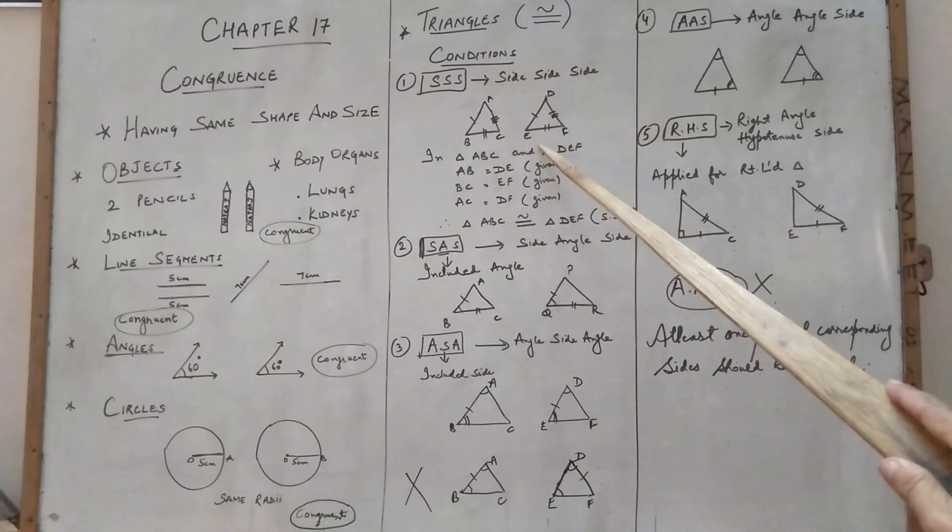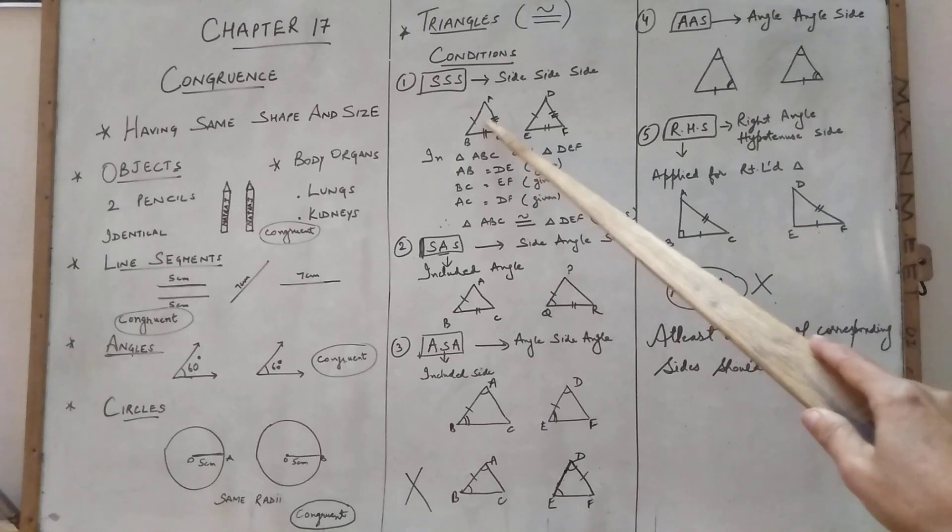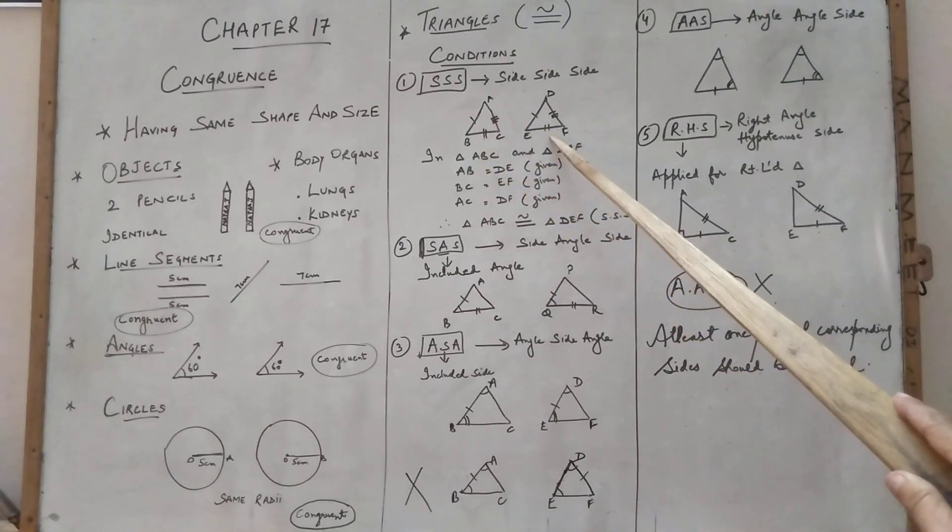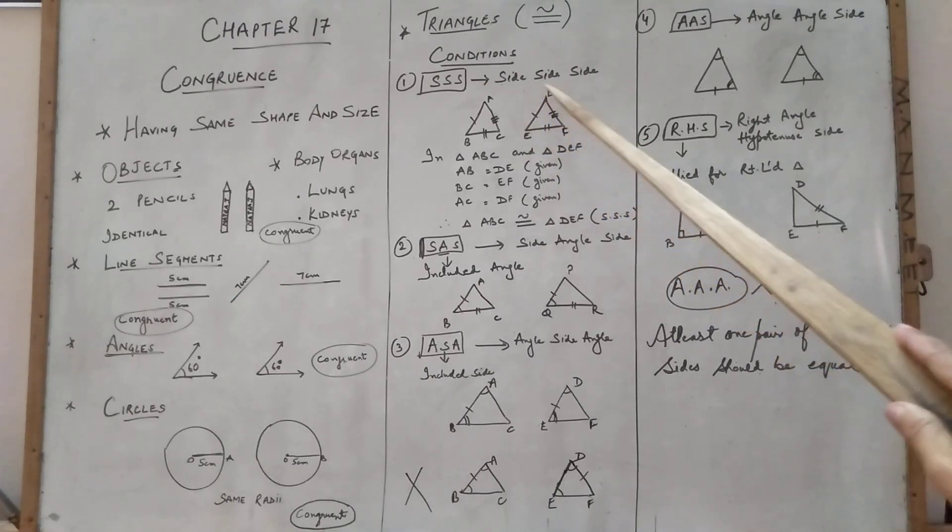So I have taken two triangles and here this side is equal to this side. See, one line I have drawn. This side is equal to this side, two lines. This side is equal to this side, three lines I have drawn.